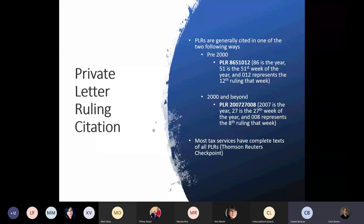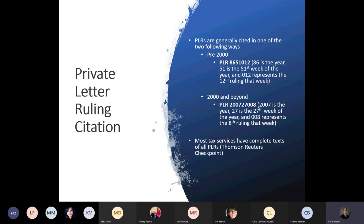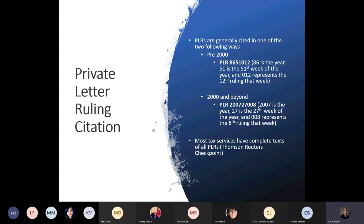For private letter ruling citations, the first two digits are the year, the next two represent the 51st week of the year, and the last three represent the 12th ruling of that week. In 2000 and beyond, they extended to four digits for the year, like the other citations. Most tax services have complete texts of all private letter rulings.